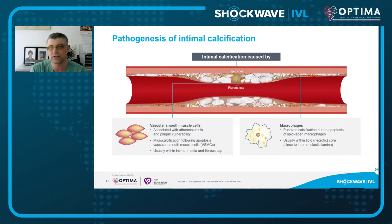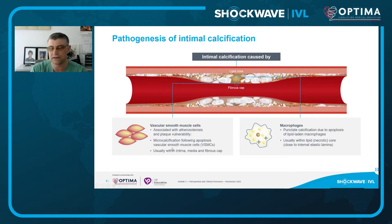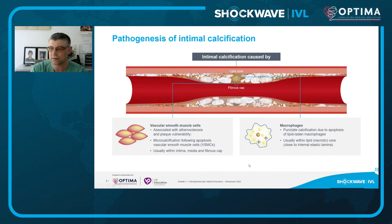Looking at the pathogenesis of intimal calcification, the two dominant cell types are vascular smooth muscle cells and macrophages. Apoptosis of vascular smooth muscle cells results in microcalcification visible under the microscope but not by any imaging — occurring within the intima, media, and fibrous cap. Macrophages show a predominance of punctate calcification, also due to apoptosis but more confluent, occurring within the necrotic core.